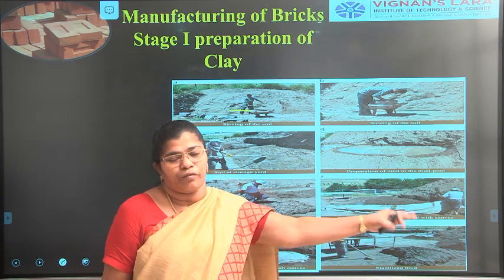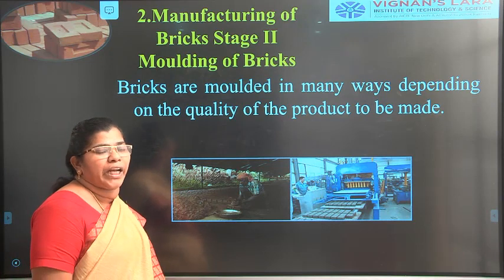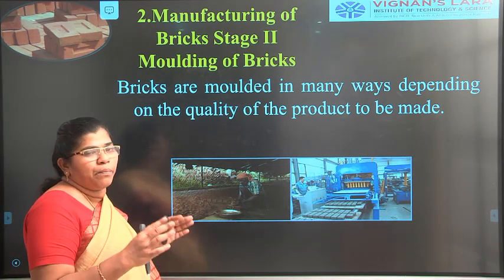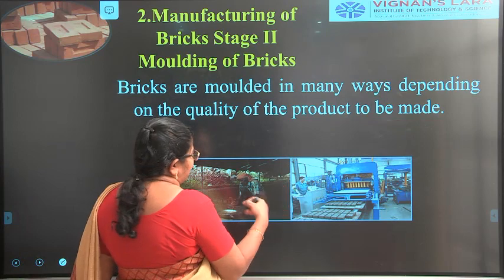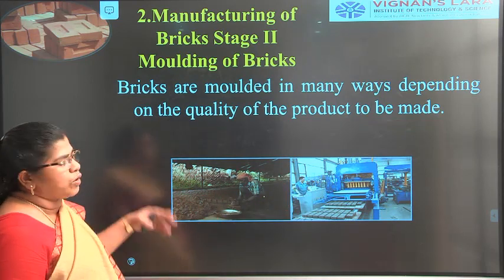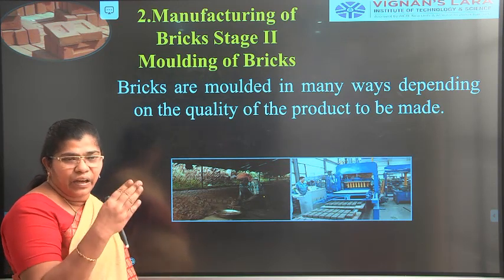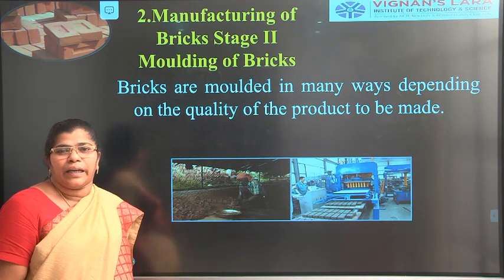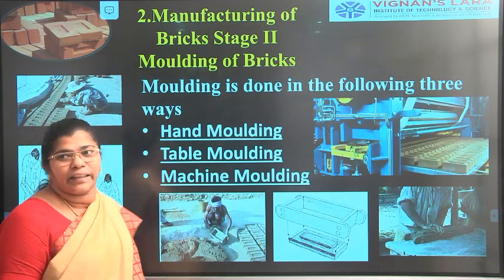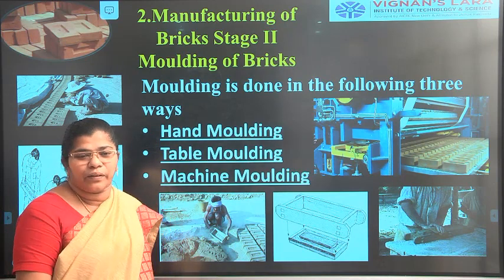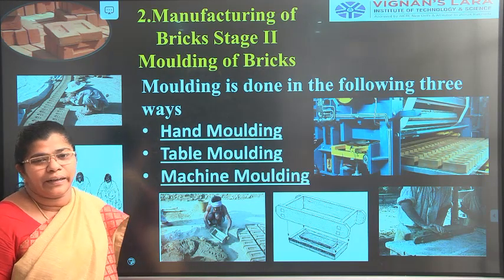In the molding process, the clay is molded to the desired shape. There are three types: hand molding, table molding, and machine molding. Hand molding uses a wooden mold where bricks are formed one by one. The quality of edges — whether smooth or wire-fitted — depends on the molding method.